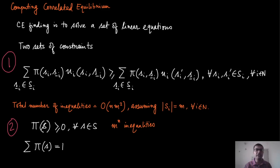In the previous module, we introduced the notion of correlated strategies and correlated equilibrium. We gave certain correlated strategies which happen to be correlated equilibrium, but those choices were somehow magical. So in this very short module, we are going to discuss how we actually can find correlated equilibrium.